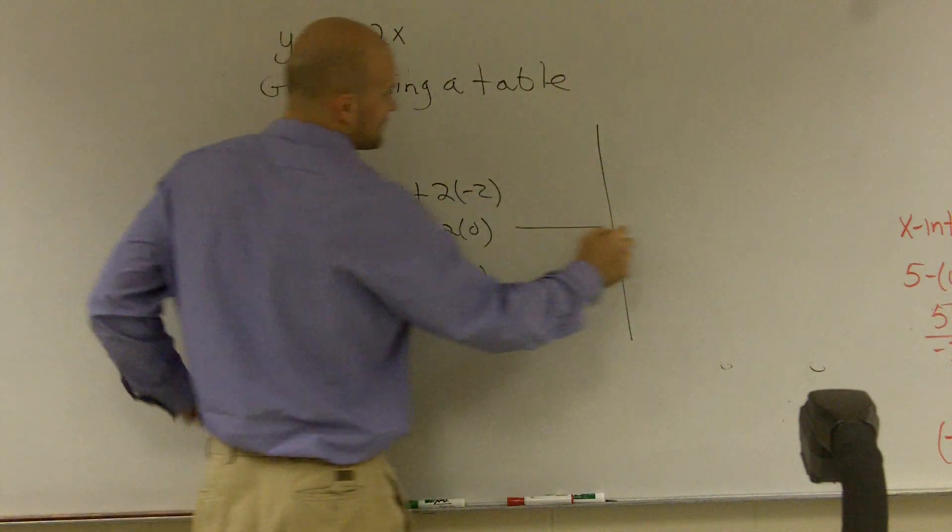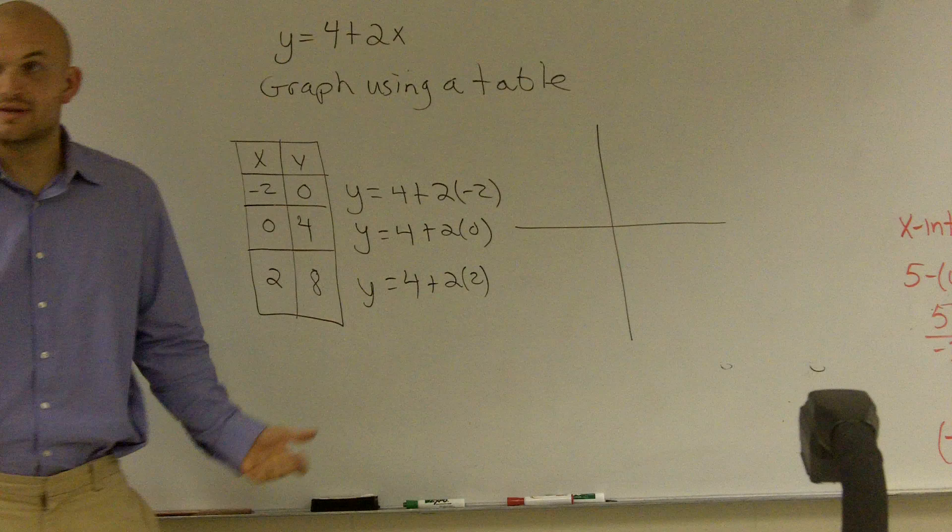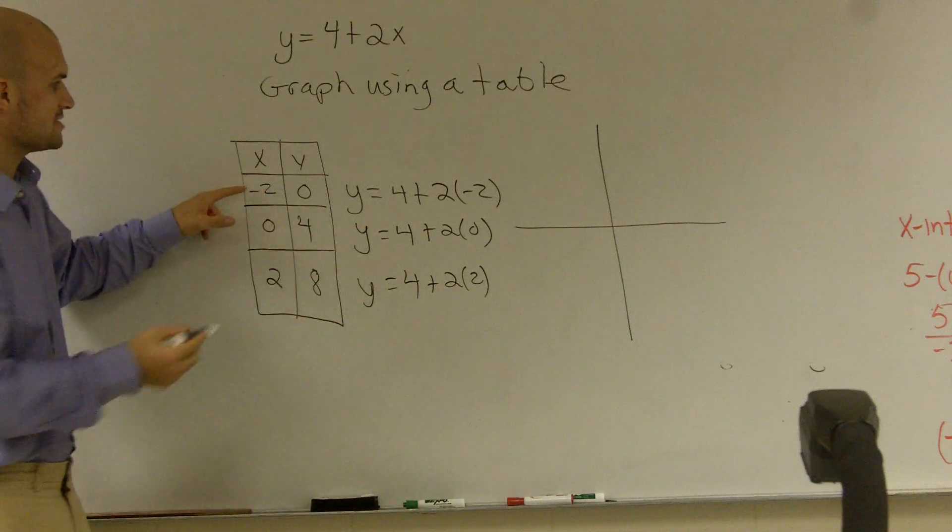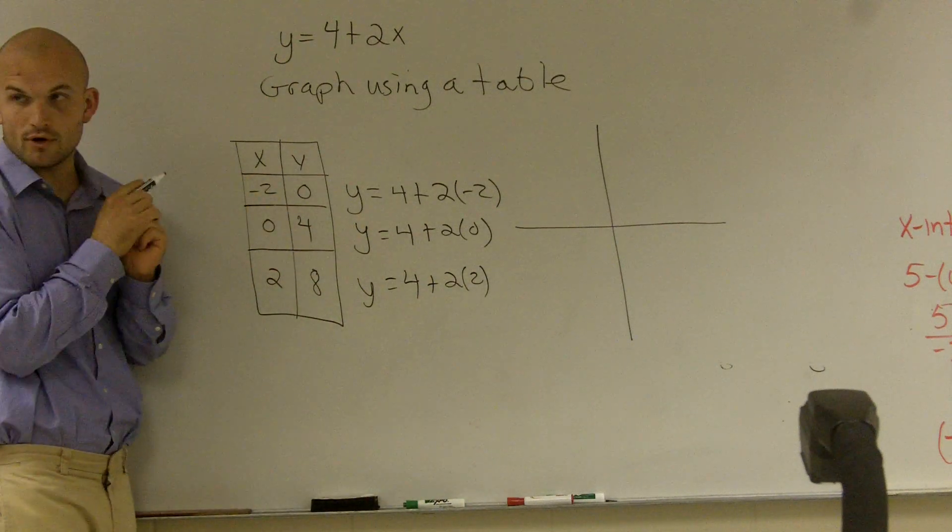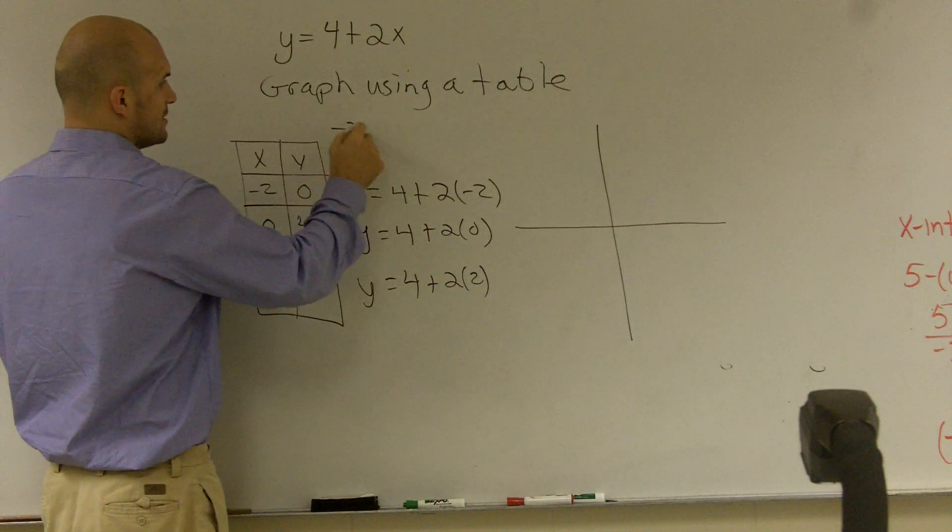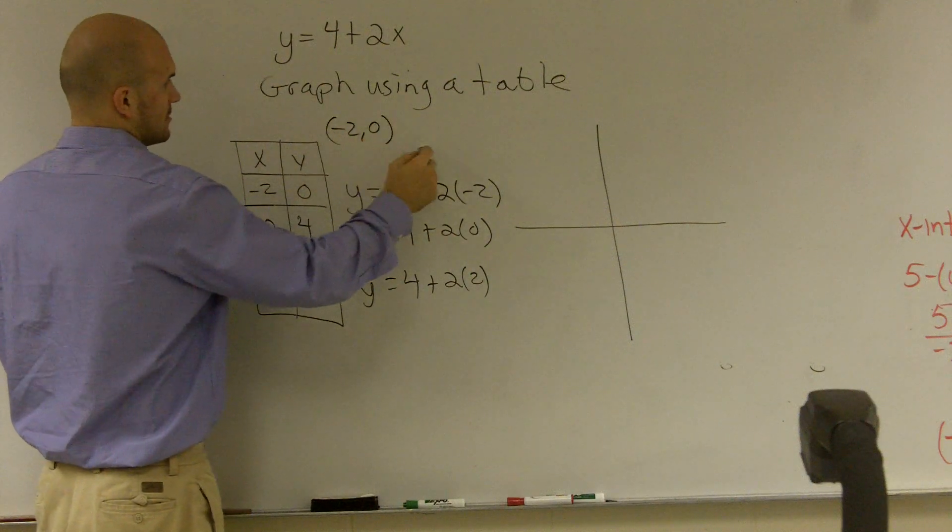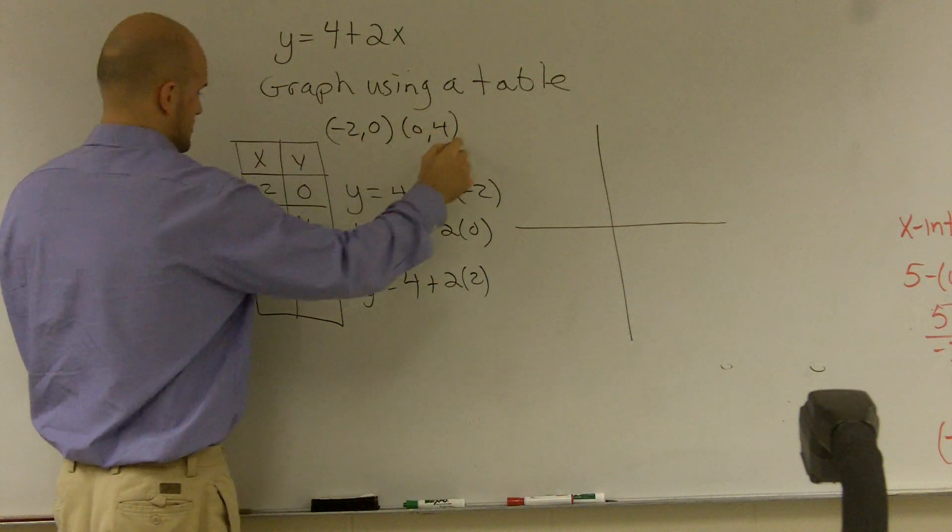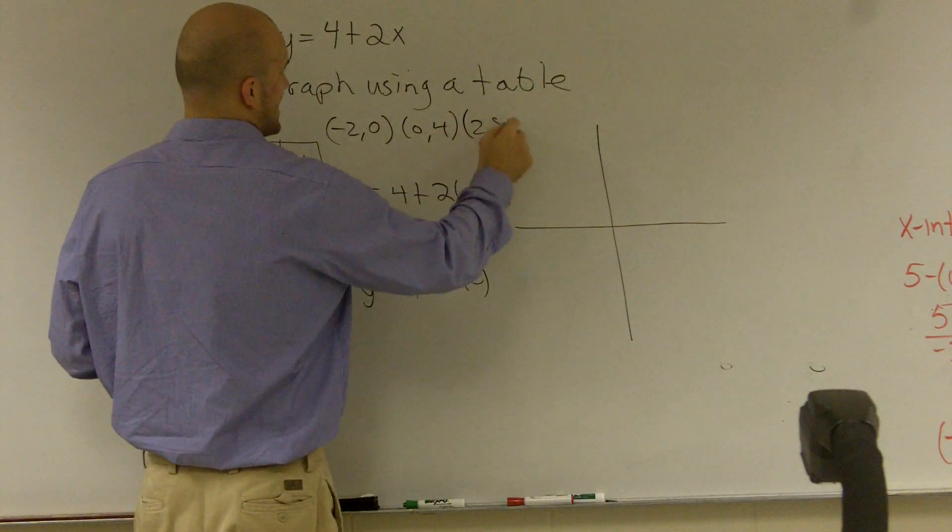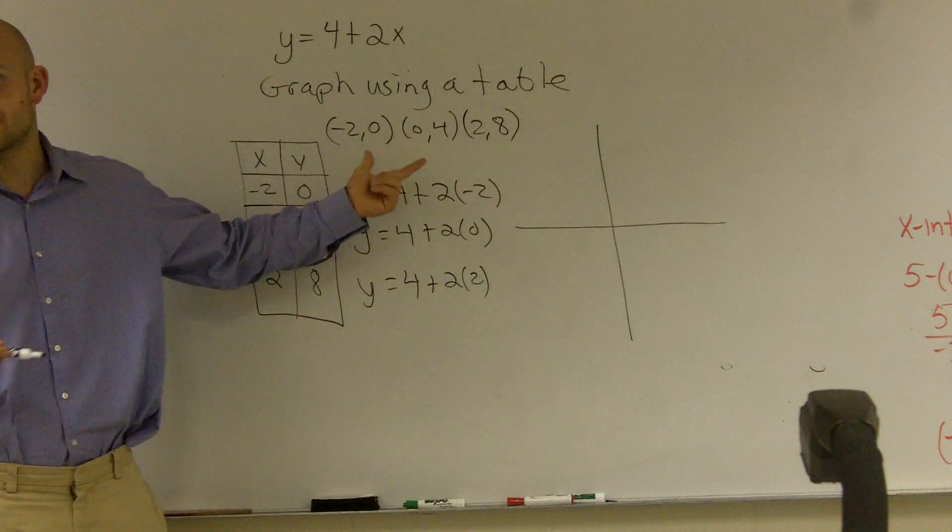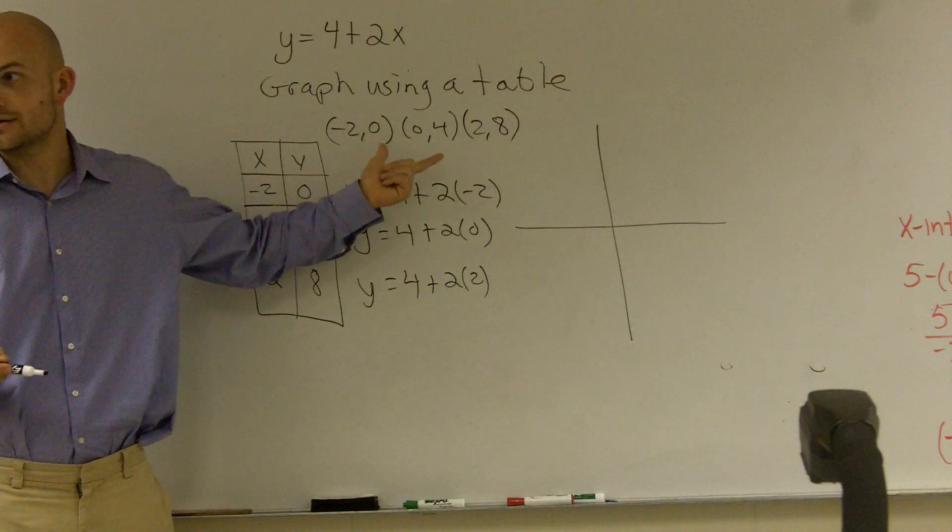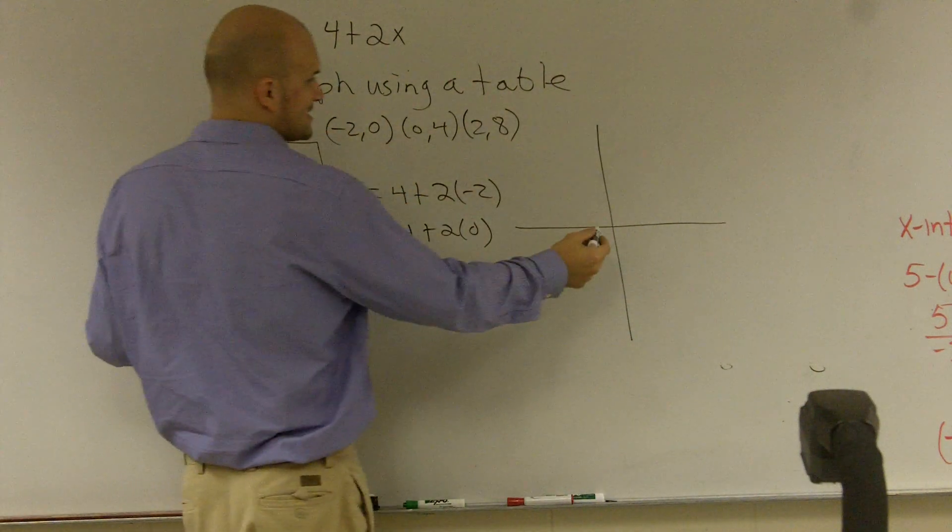So then, when we first learned how to graph, what we did was we just plot the points. Well, you remember, these are two coordinates. So you can write this as negative 2 comma 0, 0 comma 4, and 2 comma 8. And if you notice, actually, I have the x intercept and y intercept right here. But we can graph 2, 8 and see if that's on there.